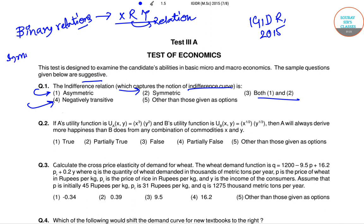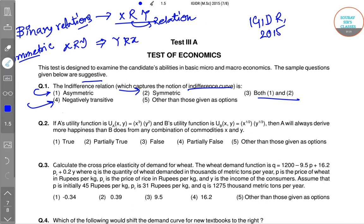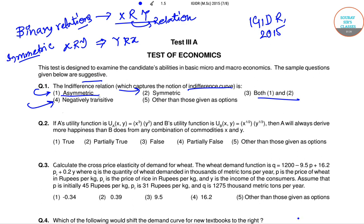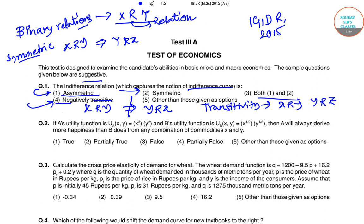By a symmetric relationship we mean X R Y also implies Y R X. By an asymmetric relationship we mean X R Y does not imply Y R X. By transitivity we mean X R Y and Y R Z implies X R Z. Negative transitivity basically means: not X R Y and not Y R Z implies not X R Z.